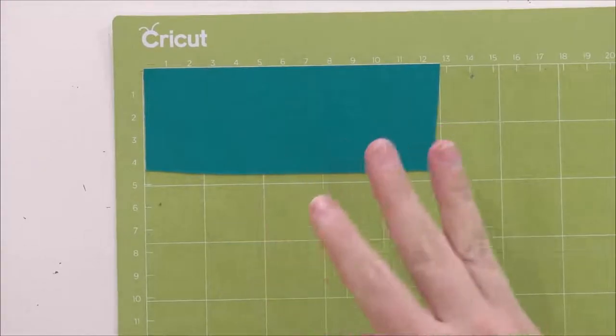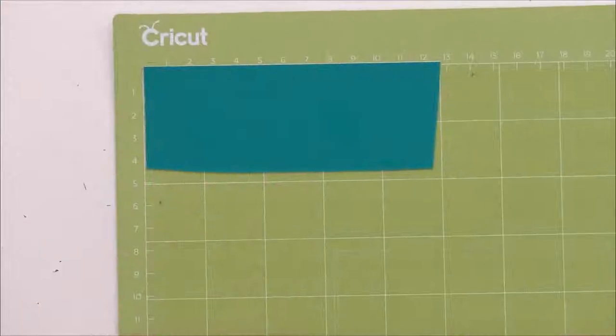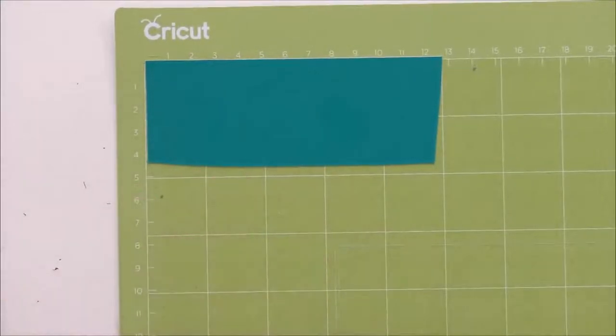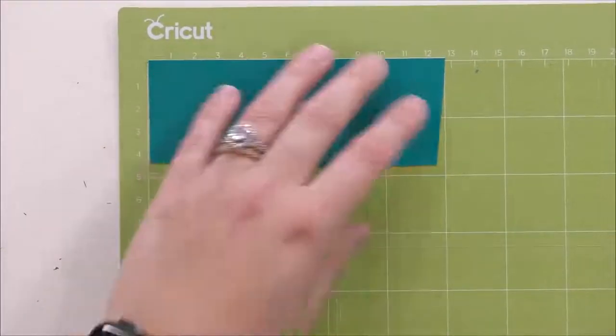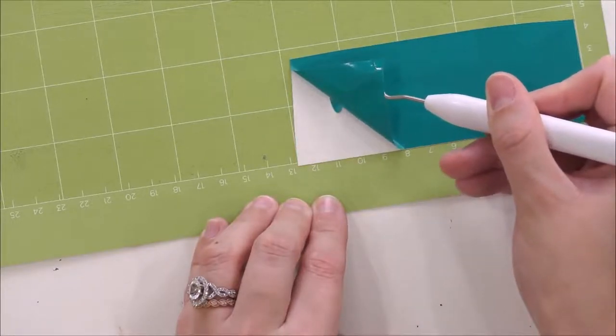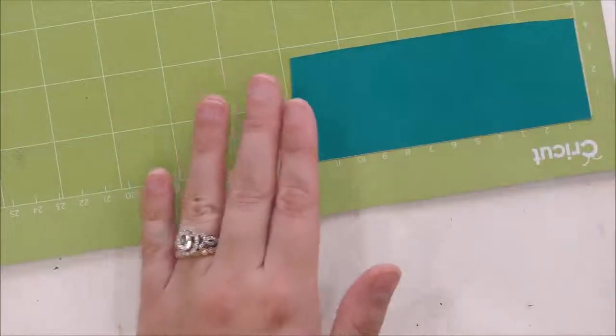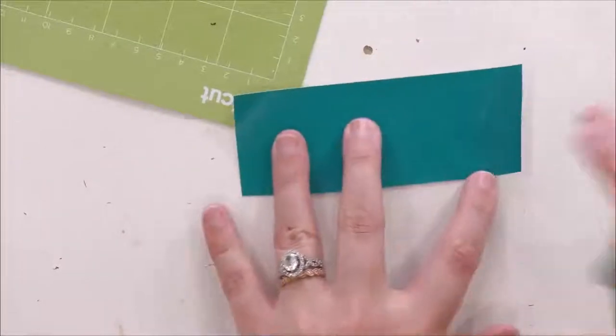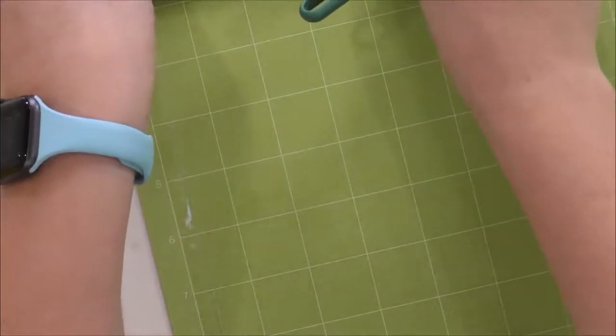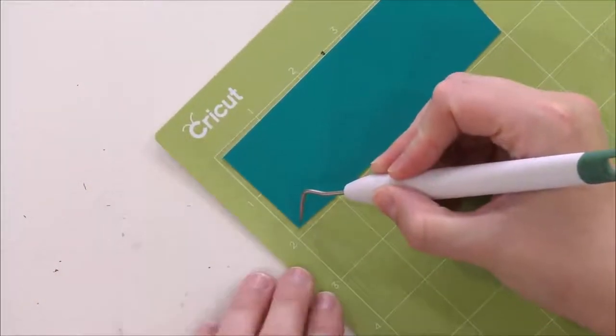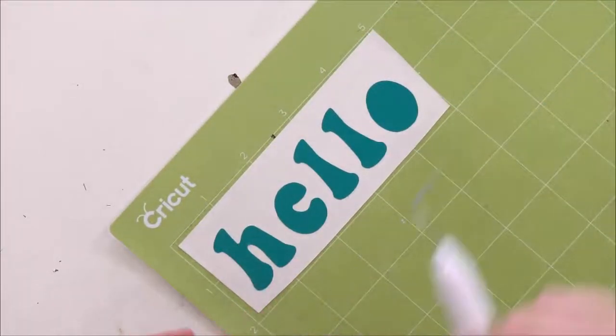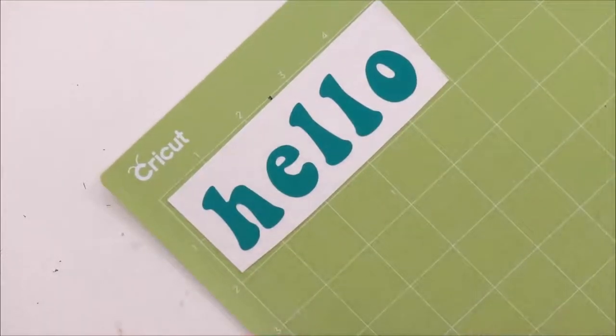Number three, the third mistake you might be making in regards just to vinyl is not weeding on the mat. In this particular instance, you might want to peel this up and start weeding. We say do not do that. You have burnished this. Now use the mat to your advantage. If you are worried about getting any sticky off of your mat, flip it over. That way your arm can be resting here on the table and you can take your vinyl and peel it up like this. It's like another hand for you. Always, always, always weed on the mat. We can't say it enough. It is always worth it every single time.